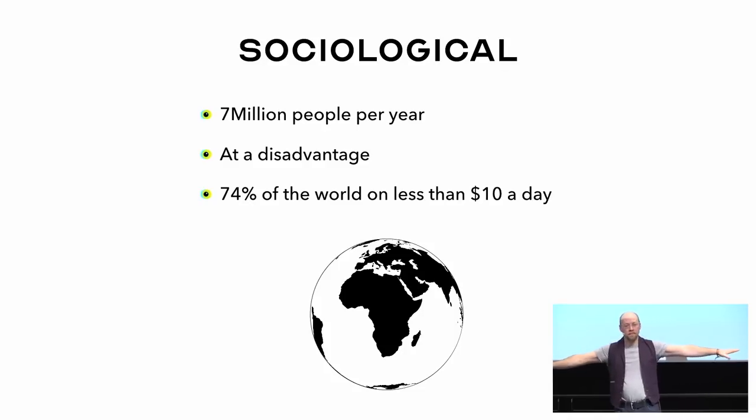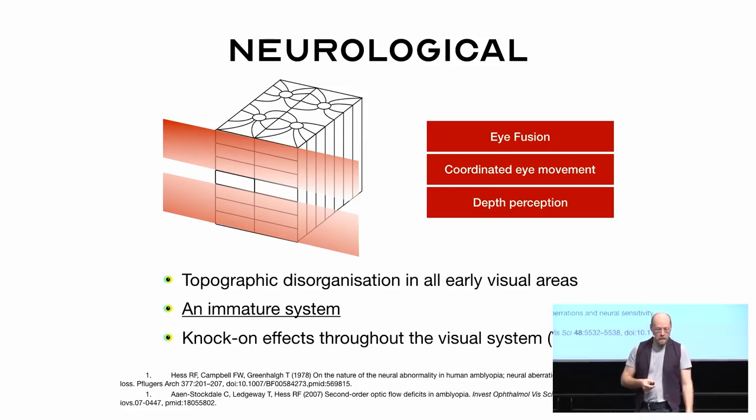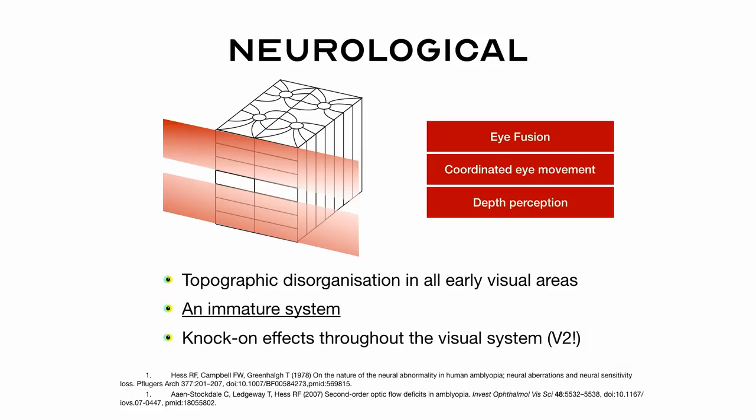Sociologically, we're talking about 7 million people a year, so it's about 5% of all people that are born at some kind of disadvantage, which might not always be necessary. Perhaps we can do something about this. And because 74% of the world are on less than $10 a day, most people aren't going to have very many options.